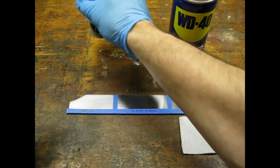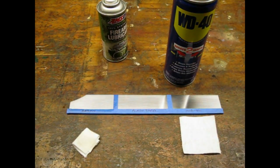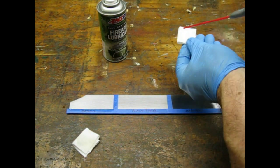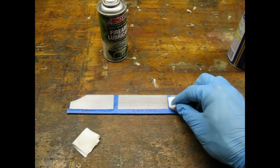I sprayed the Amsoil onto a clean patch and applied it to one section. I noticed the can had a rattle ball in it like spray paint. I applied the WD-40 with another patch. The center section I left plain steel.